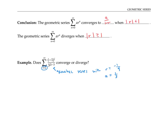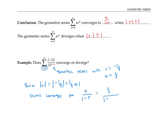We found the first term a by plugging in i equals two and got a first term of one third. Since the absolute value of r — the absolute value of negative one ninth — is one ninth, which is less than one, we know the series converges. It converges to a over one minus r, so that's one third over one minus negative one ninth, which is one third over one plus one ninth. That's one third over ten ninths, which simplifies to three tenths.